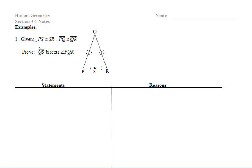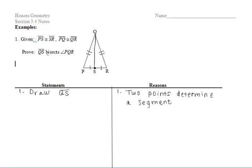Let's look at what we want to prove. We want to prove that QS bisects angle PQR. We don't even see QS in the diagram, so let's go ahead and construct that segment. Keep in mind, like we talked about in the first part of the notes, we have to add that in our proof and say that we're drawing segment QS because two points determine a segment.